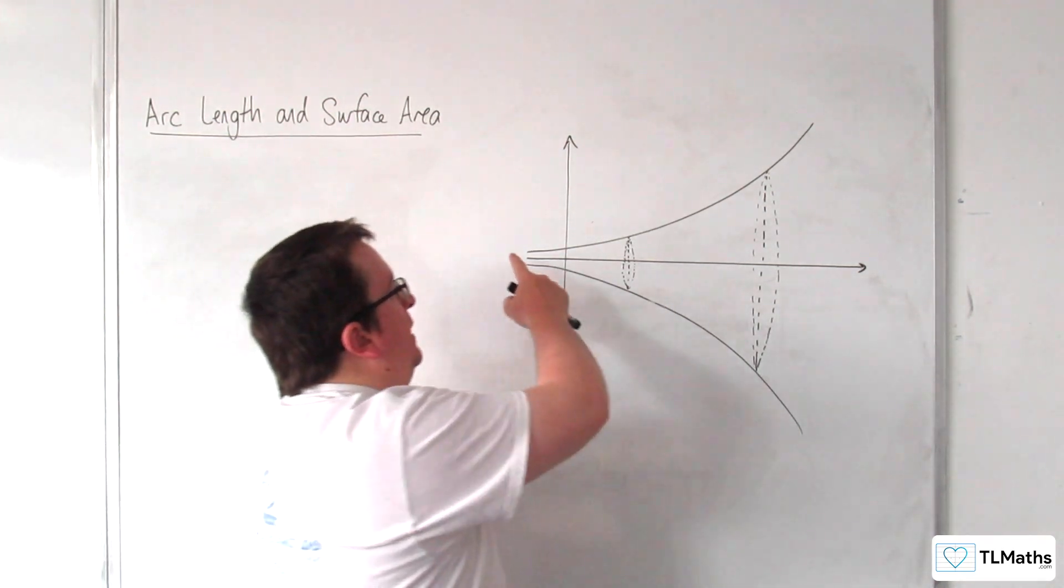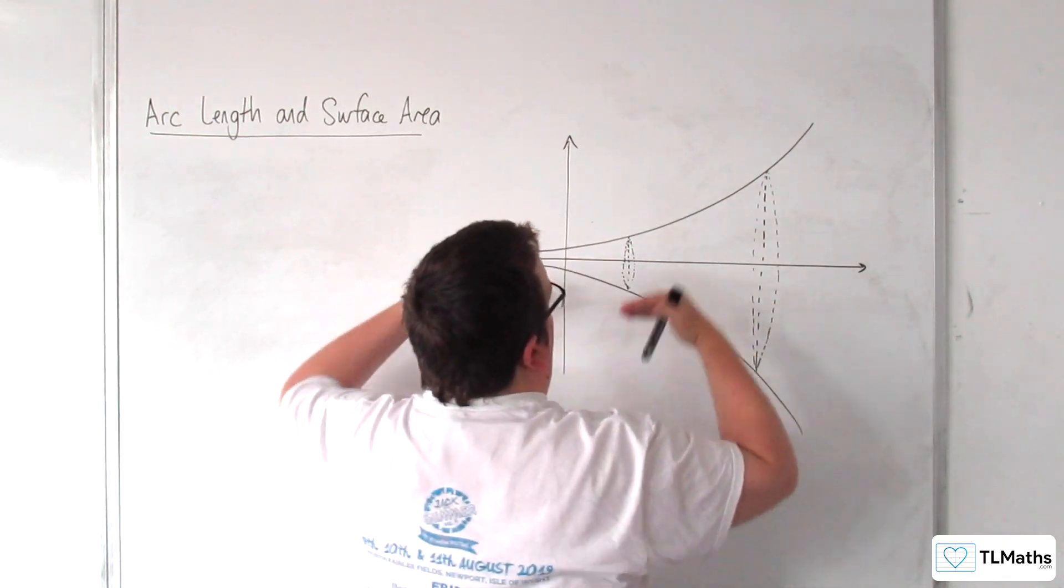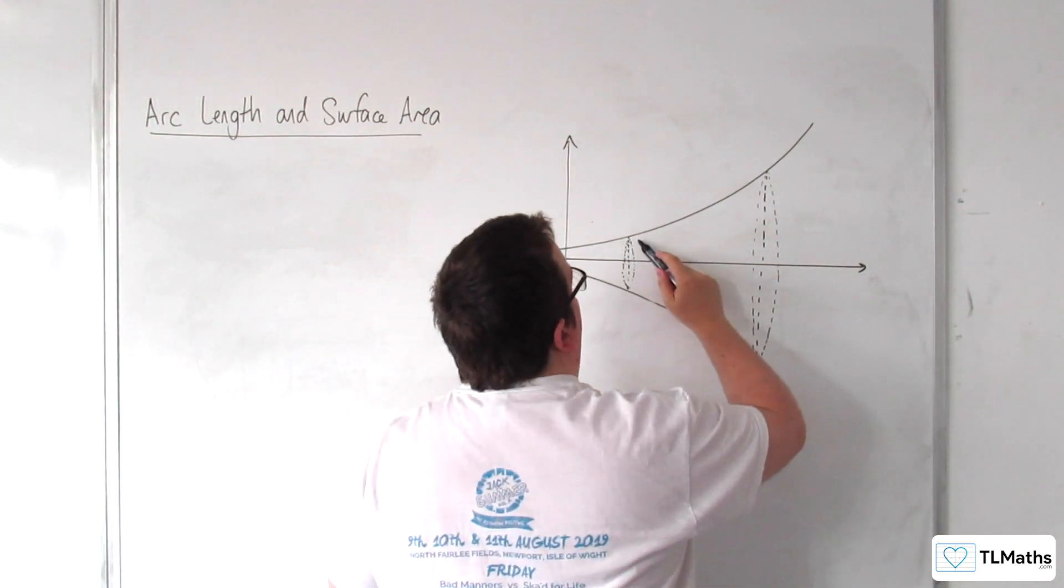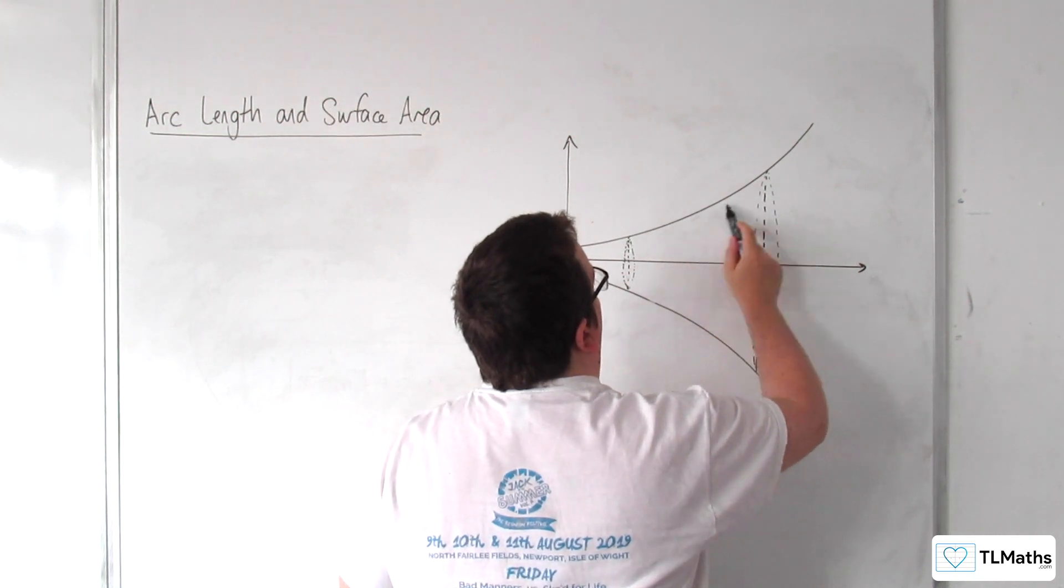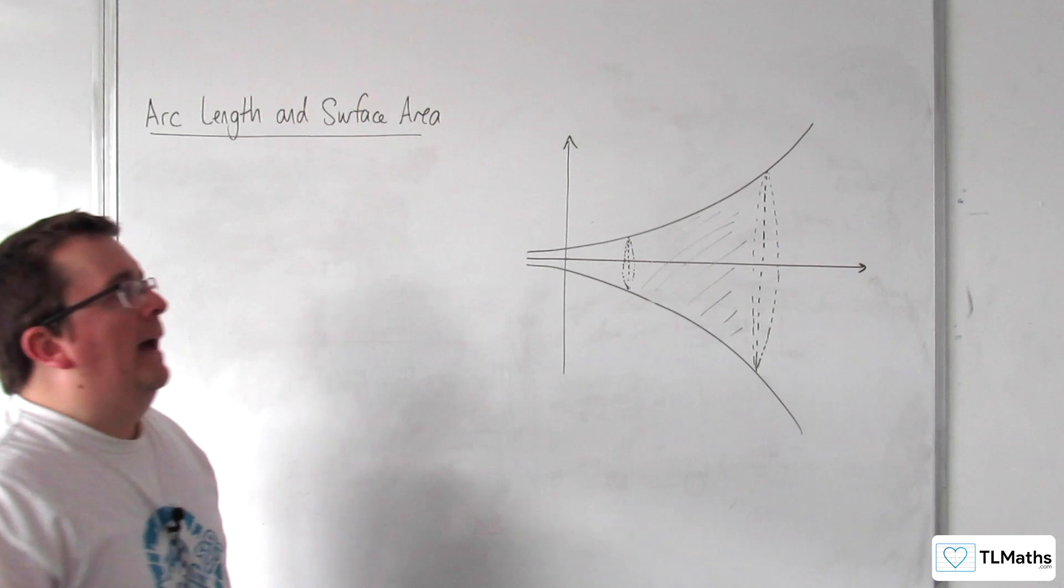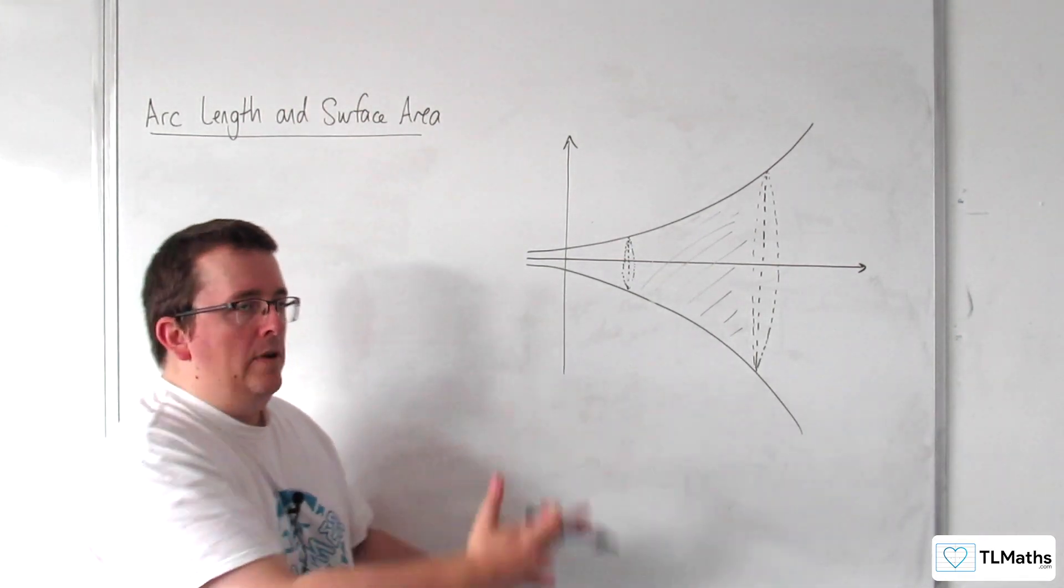So here is my curve, and I've rotated it around the x-axis. What I'm interested in is this area here, and that's the area all the way around.